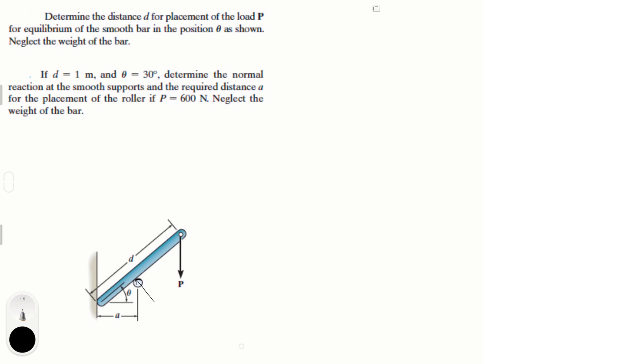Let's draw the free body diagram. We have a reaction here — I'll call this reaction R — and this angle right here is also theta. We have a horizontal reaction, which I'll call Fx. There's no vertical reaction because this side is smooth. This angle here is also theta, and we have distance a.